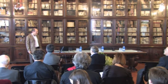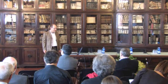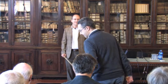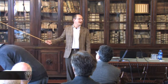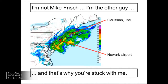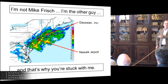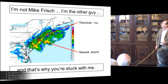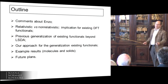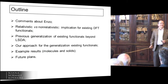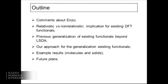Thank you for inviting me to this special edition — happy birthday — for the winter modeling school. I'm not Mike Frisch; this is the reason why Mike is not here. That was the weather map over New England at the time he was taking his flight. This is Gaussian, this is Newark Airport — that's winter storm Athena. I have a tree across my backyard now, so I'm the other guy.